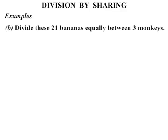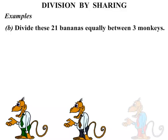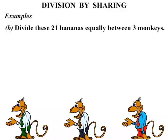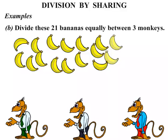The next example: divide these 21 bananas equally between 3 monkeys. Well there's our 3 monkeys, but where are the bananas? We need 21 of them — counting up to 21.